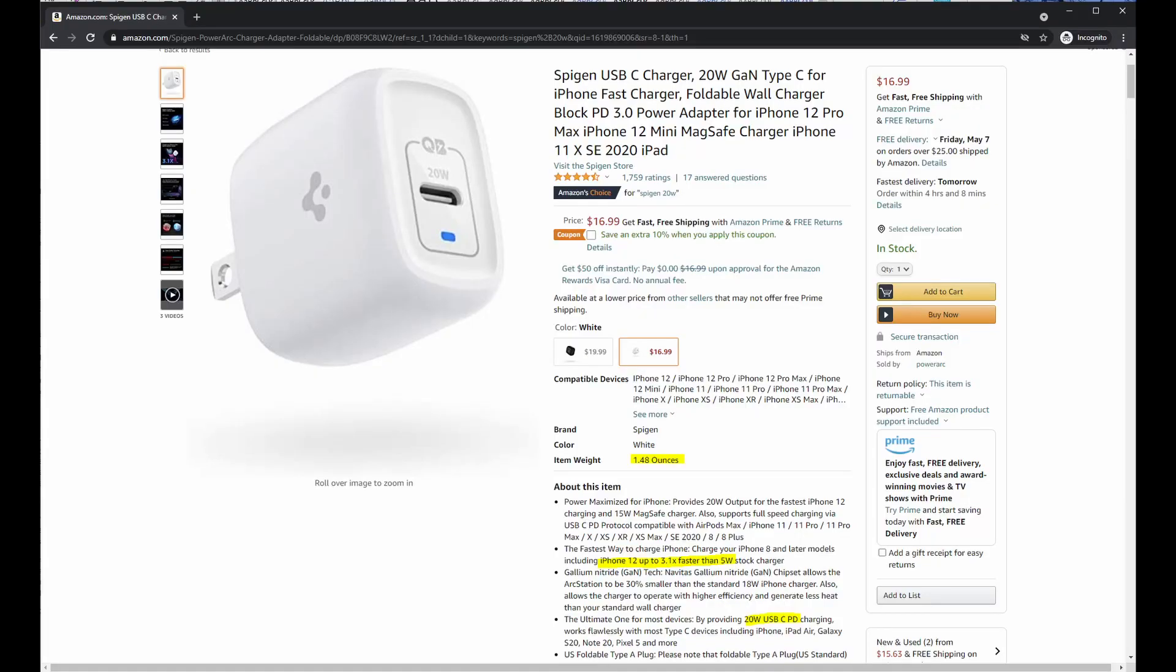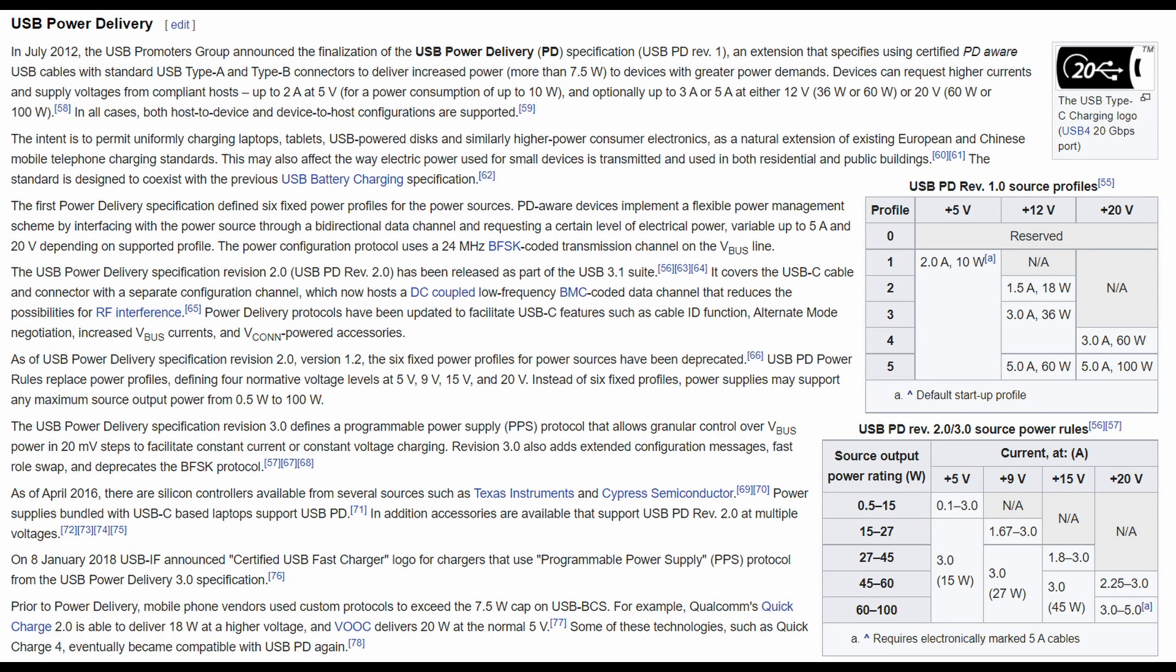The Spigen makes claims on its Amazon webpage about being able to charge with PD 3.0, but it's clearly not compatible with this technology. Neither would communicate with the quick charge power delivery system, so the 100% load case is omitted in both cases. The quick charge protocol is the standard that allows USB devices to negotiate for higher voltages and therefore deliver more power to devices.